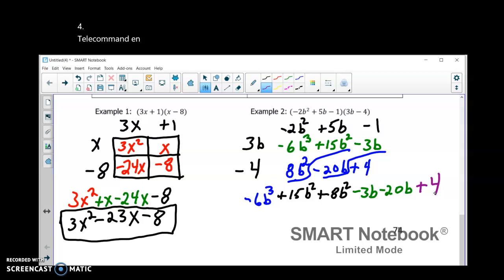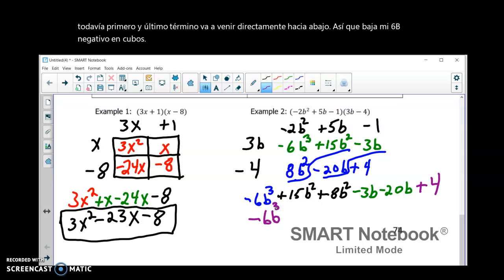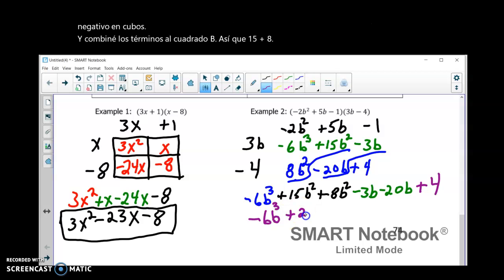And just like on the previous one, we got more terms on this one. But still, first and last term, we're going to come straight down. So, I'll bring down my negative 6B cubed. I'm going to combine the B squared terms. So, 15 plus 8 plus 23B squared.